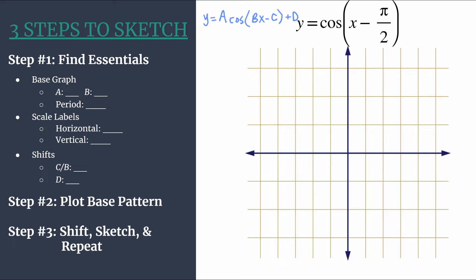We'll first start by looking at what will get us our base graph for our base pattern in step two. A is an understood one. It's the coefficient in front of cosine. So we know we'll have an amplitude of one, distance from midline to max or min.